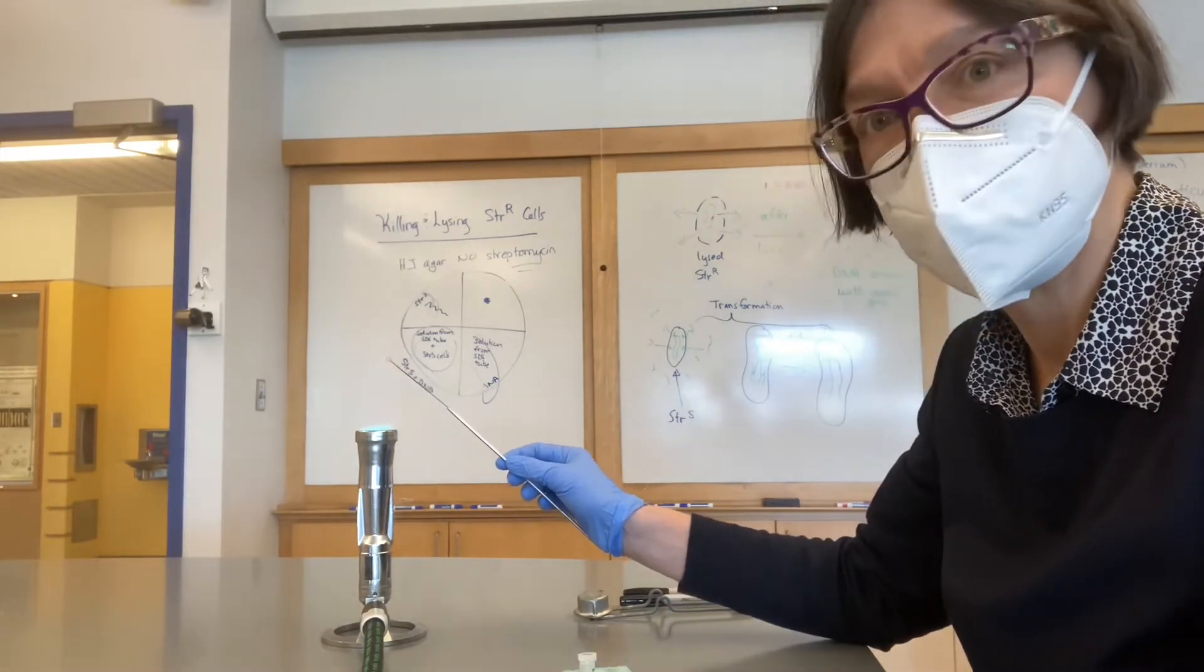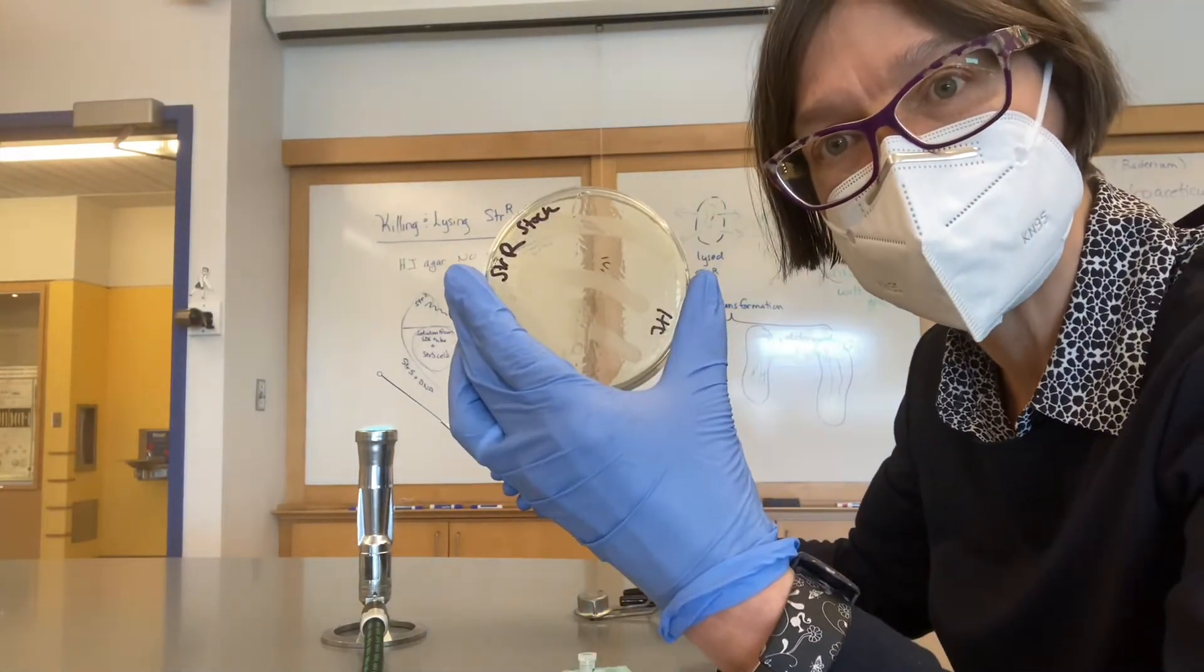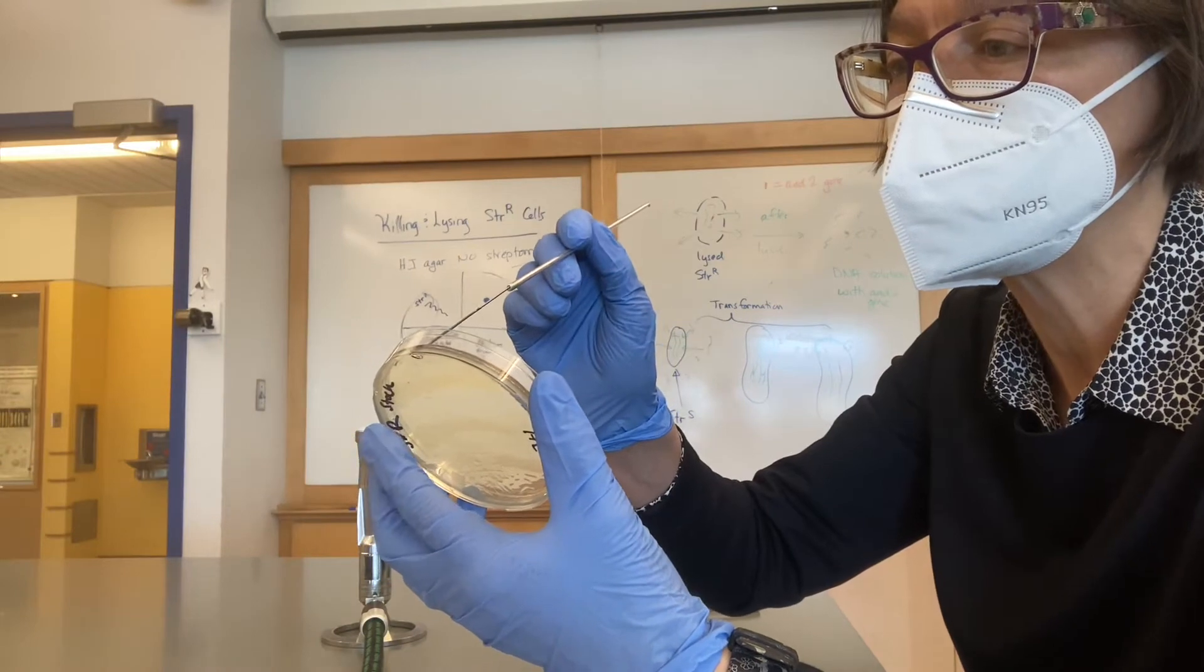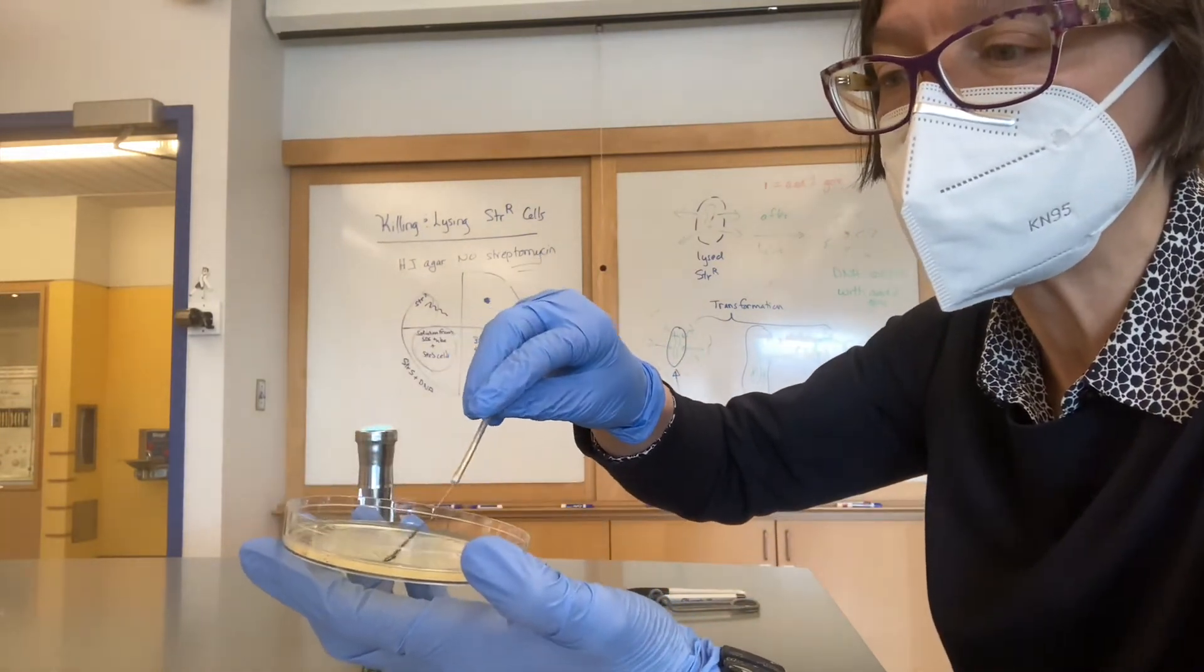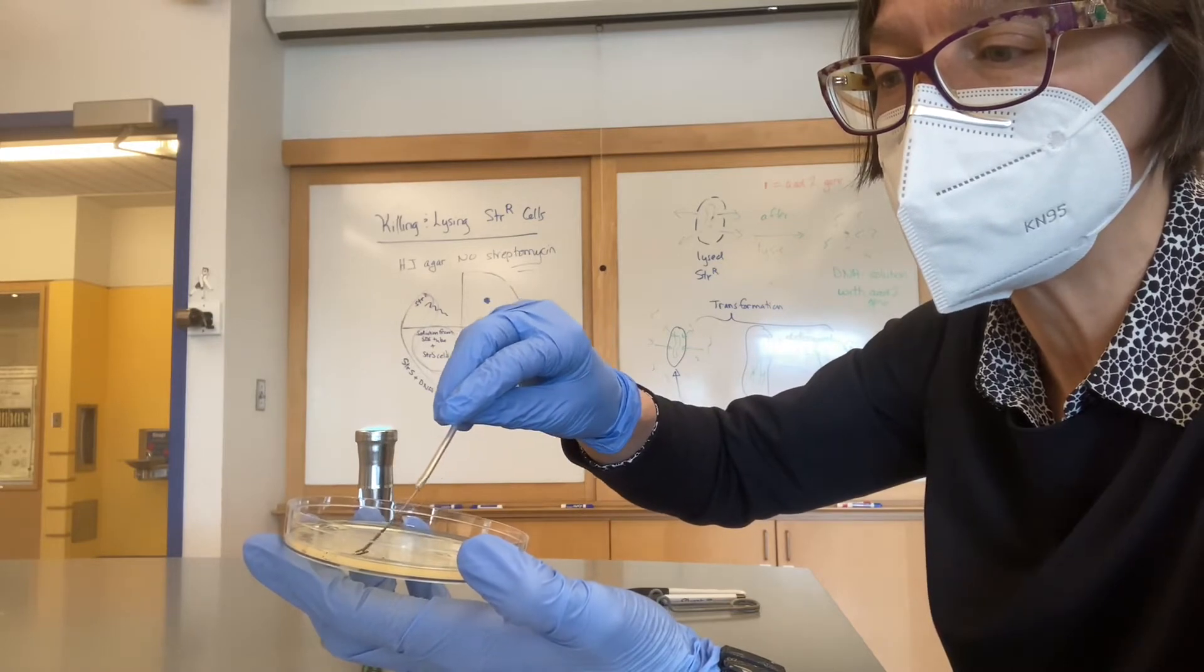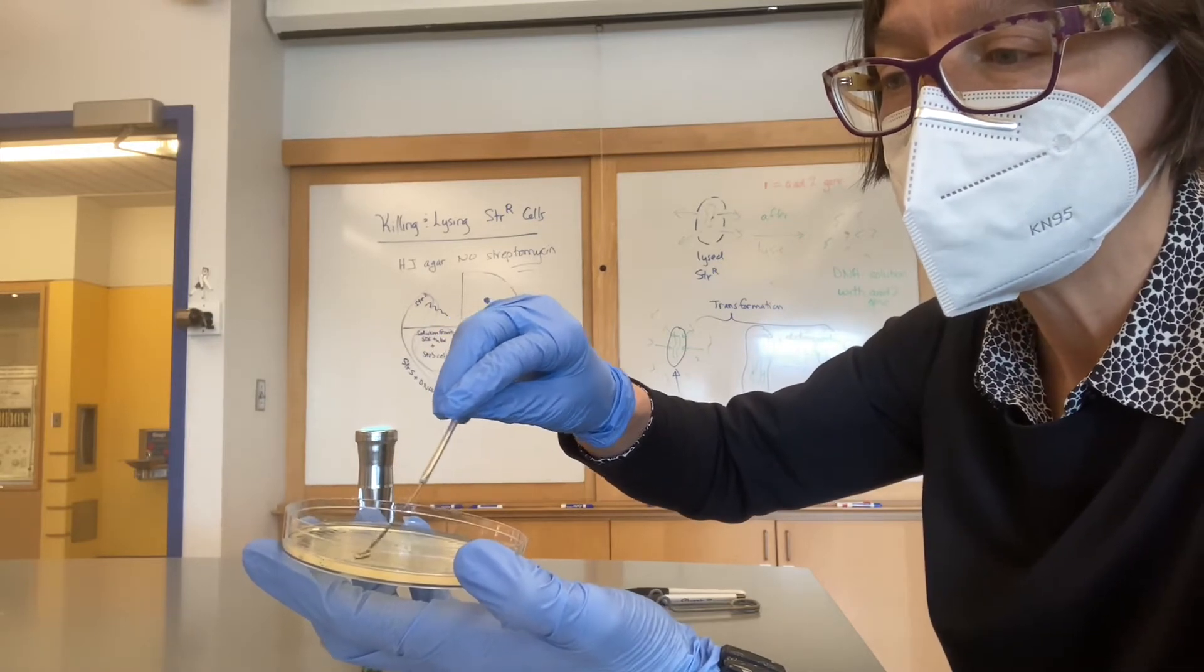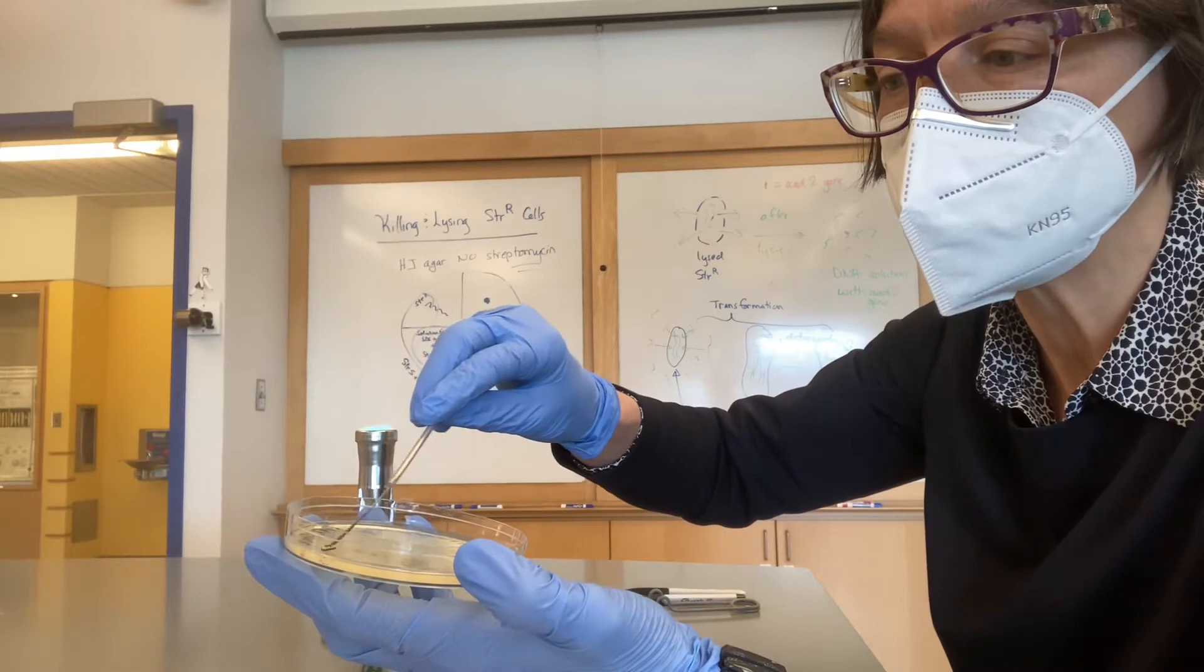Then I take my plate of STRR, cool the loop, and then I'm going to gather up some cells by scooping them up a little bit, a little ball of cells. A little goes a long way.